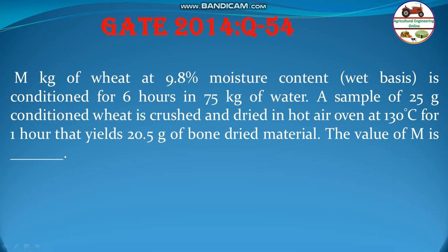It says: m kg of wheat at 9.8% moisture content on a wet basis is conditioned for 6 hours in 75 kg of water. A sample of 25 gram conditioned wheat is crushed and dried in a hot air oven at 130 degree Celsius for 1 hour. That yields 20.5 gram of bone-dried material. The value of m — that means the amount of wheat initially used — we have to calculate. Let us go to the solution.